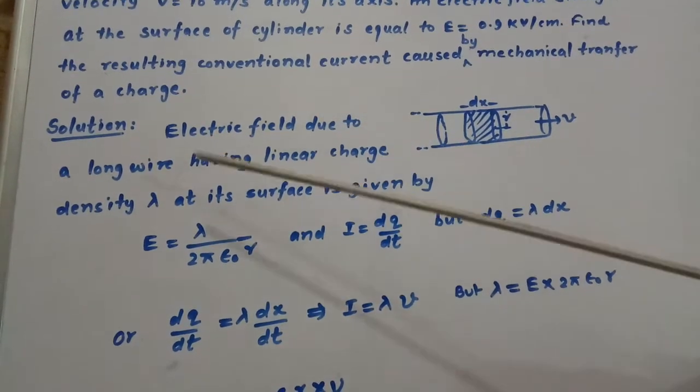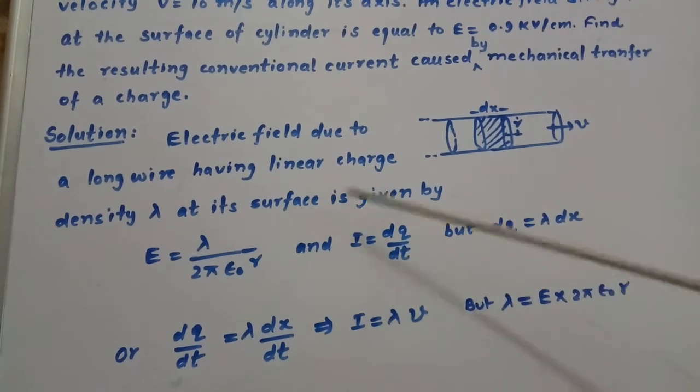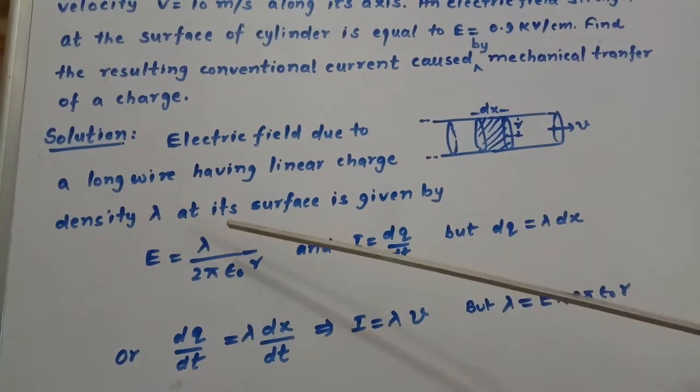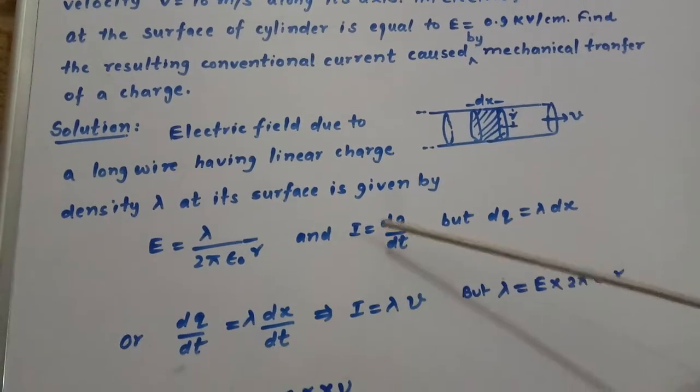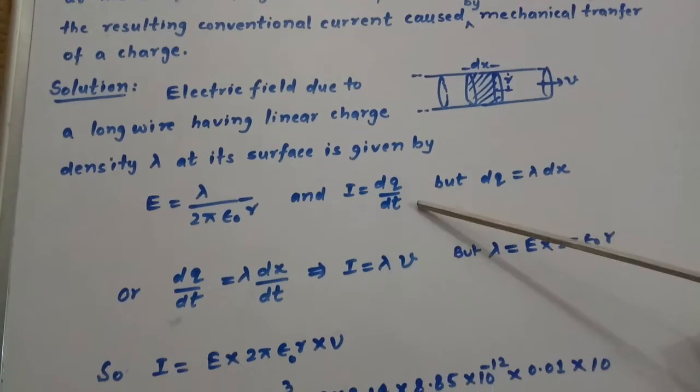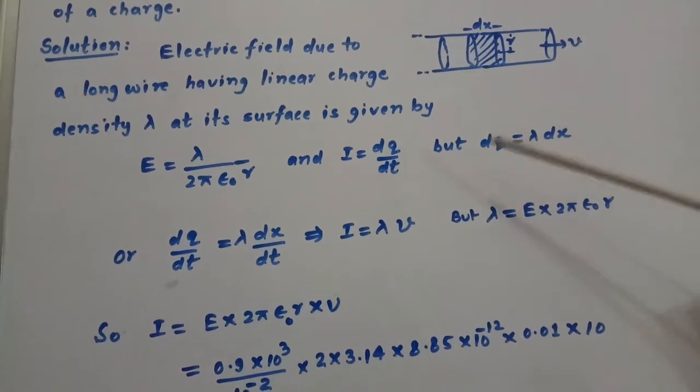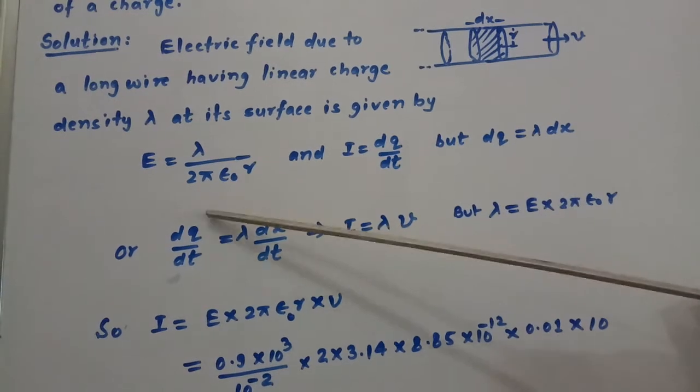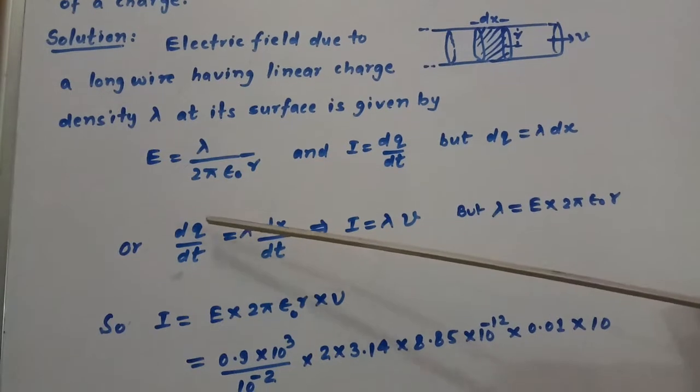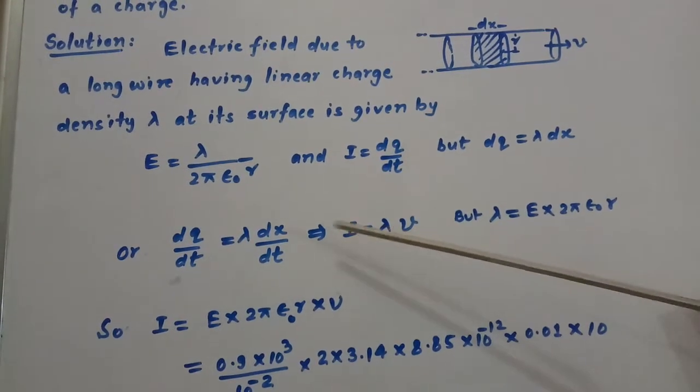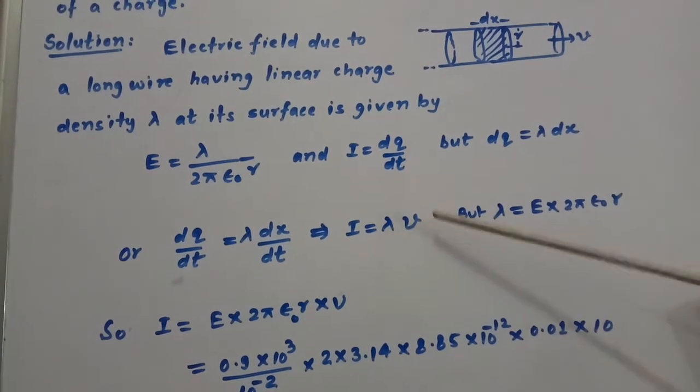Now electric field due to a long wire having linear charge density lambda at its surface is given by E equal to lambda divided by 2 pi epsilon naught r. And we know that I equal to dq by dt but dq equal to lambda dx. Now dq by dt equal to lambda dx by dt, or I equal to lambda v, since dx by dt is velocity.